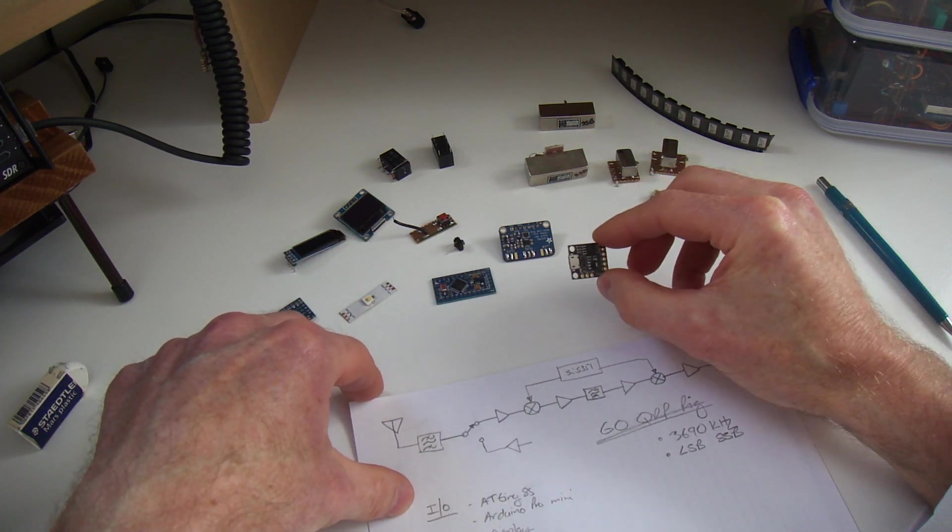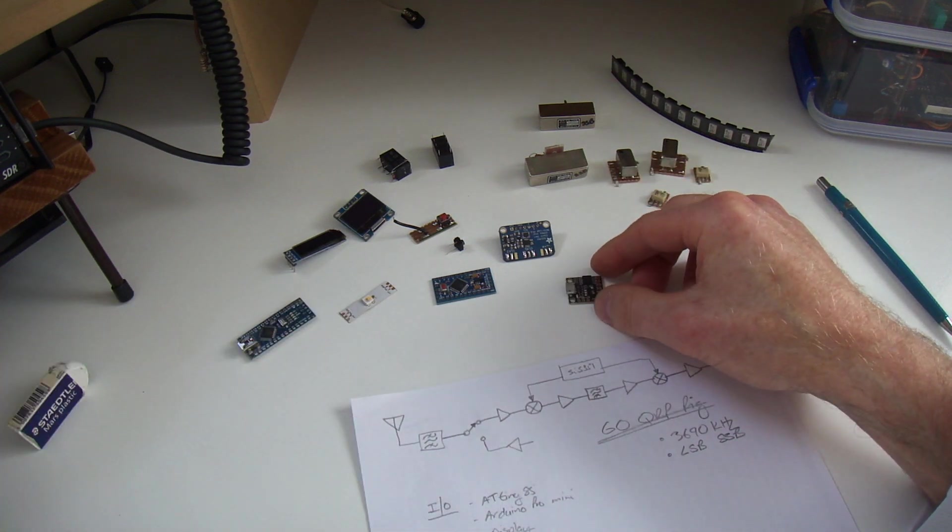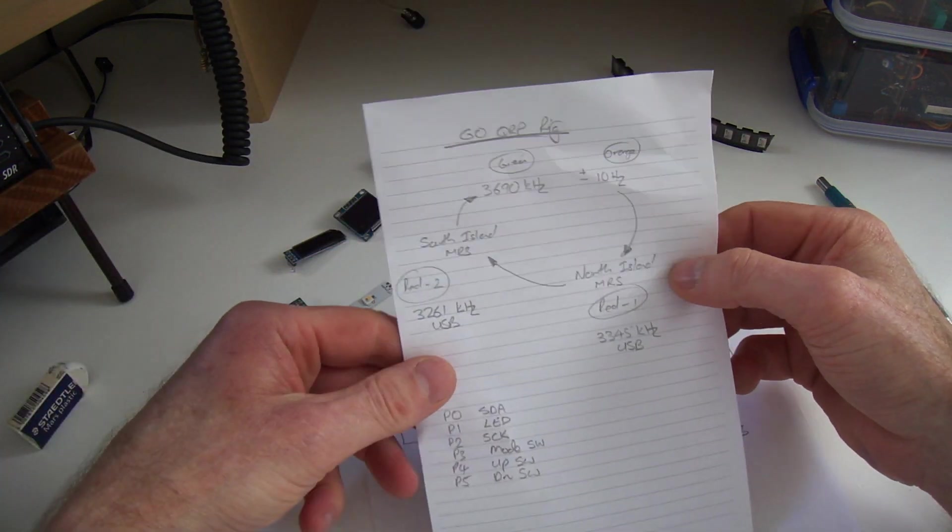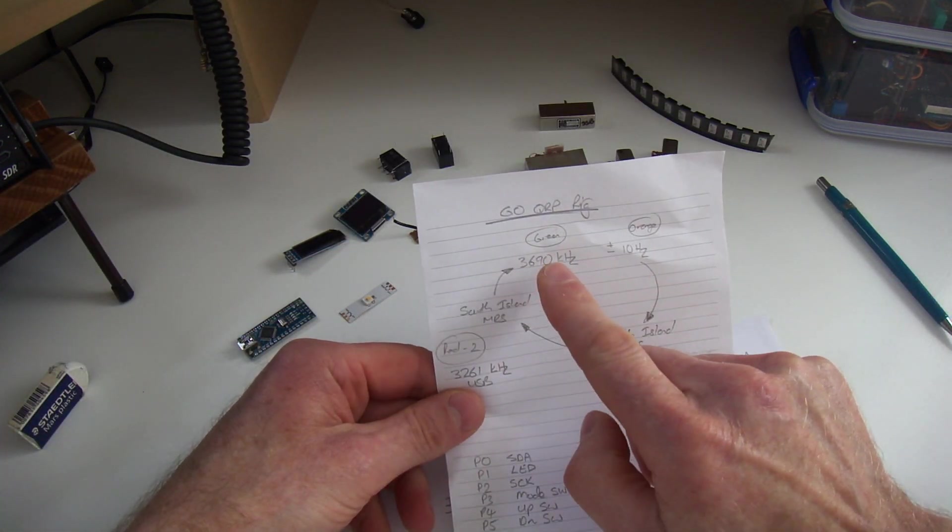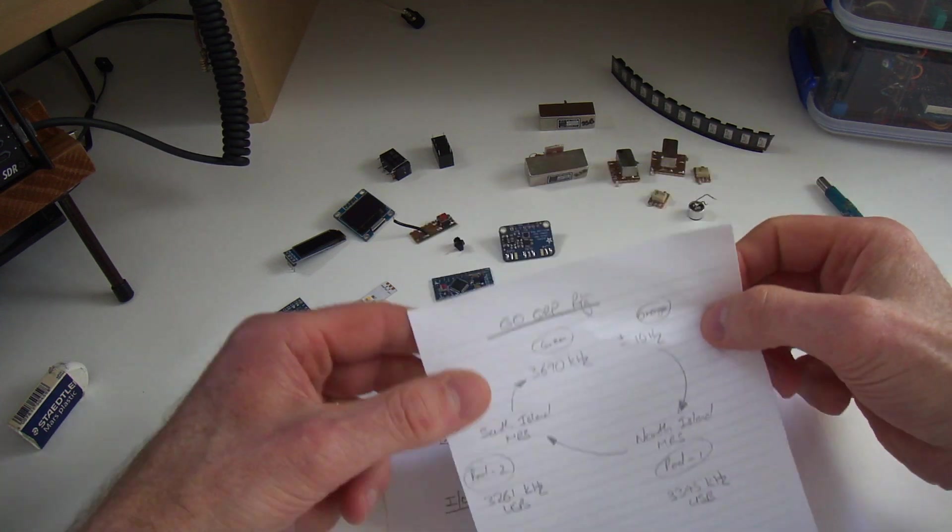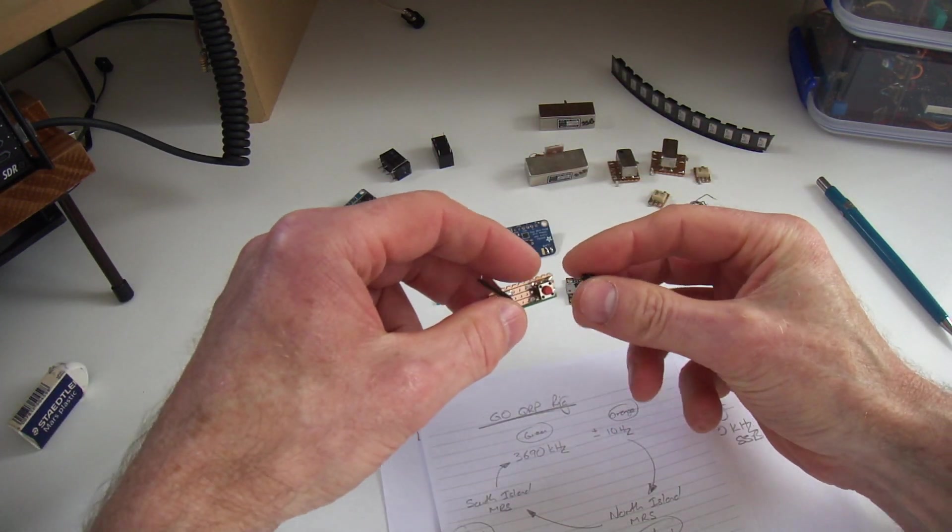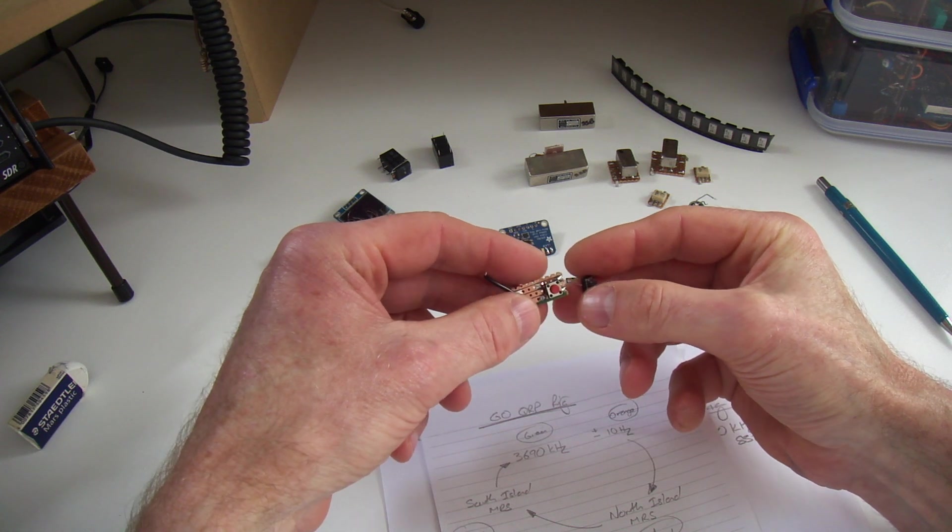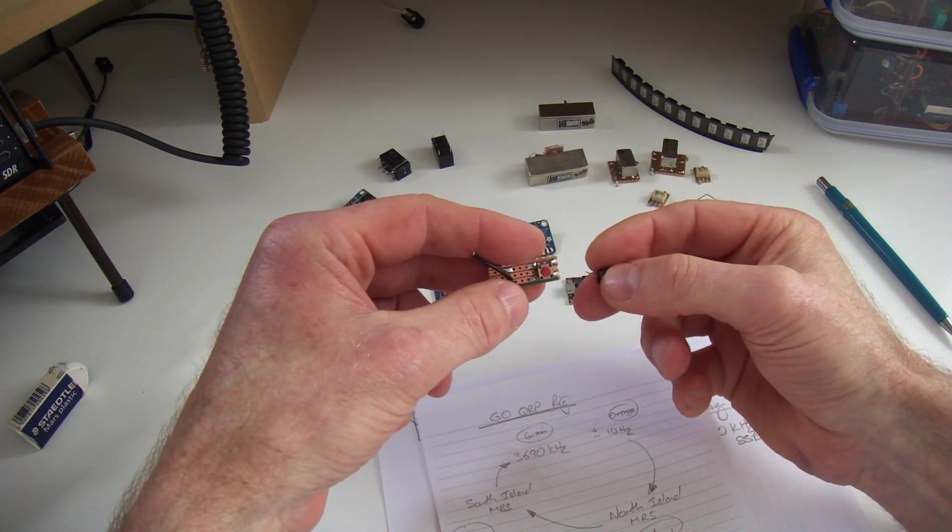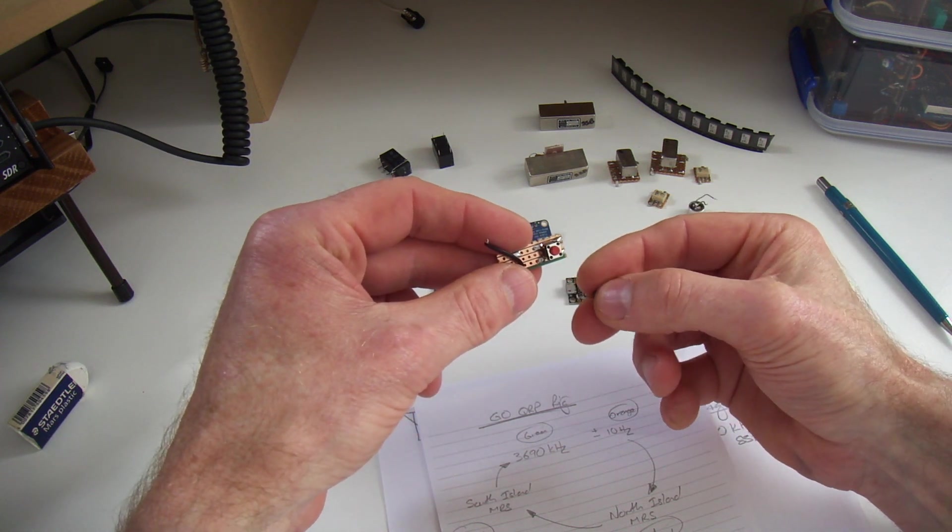So using this as the microcontroller would certainly go a long way for that. In terms of I/O, because this is just going to be a simple mode switch and up and down frequency, I'm just going to use simple little push button switches here, nice and small. The red one will be the mode switch and then there'll be two black ones, one for up and one for down.